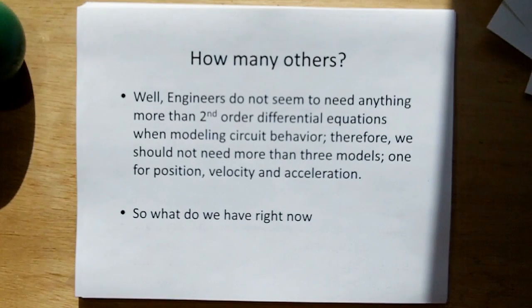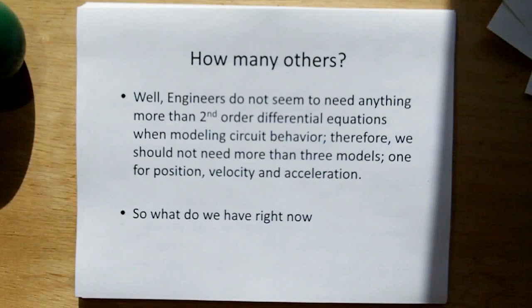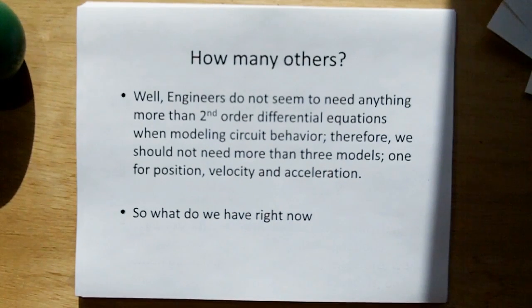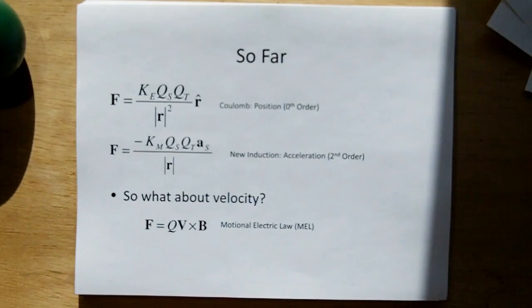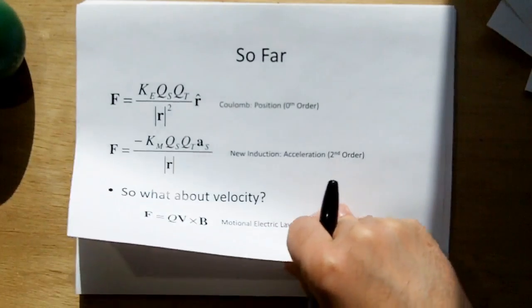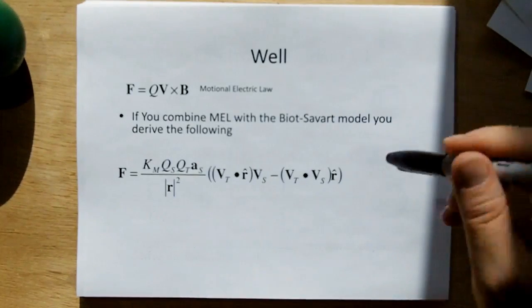Now remember that the primary argument that classical induction was wrong is it does not apply to open loops or point charges. If charges are the most basic building block of electromagnetic structures, then all electromagnetic effects need to be able to reduce to point charges and second order point charges. But now that we have a model for inductance, what about the others? Now how many others could there be? Well, engineers do not seem to need anything more than second order differential equations.